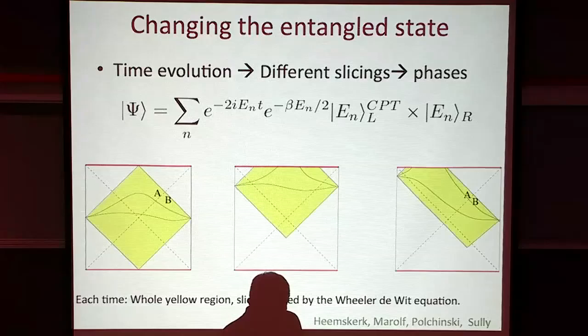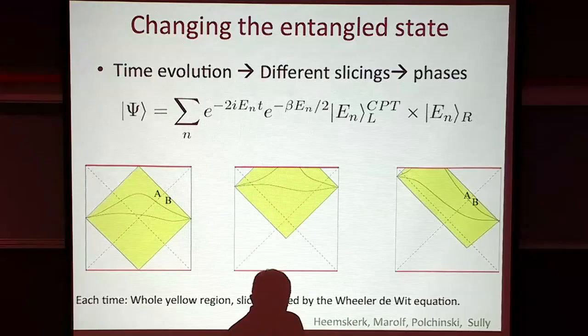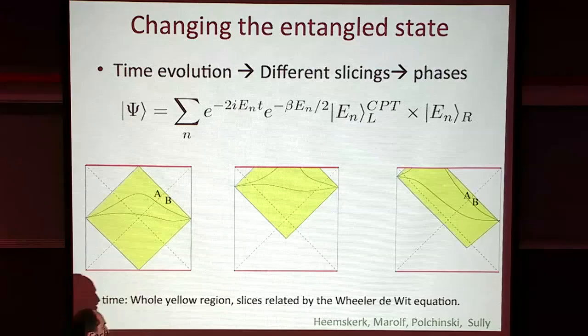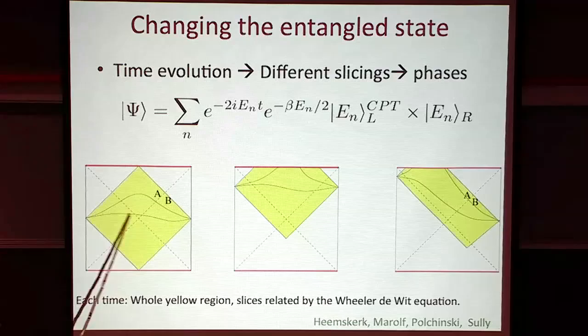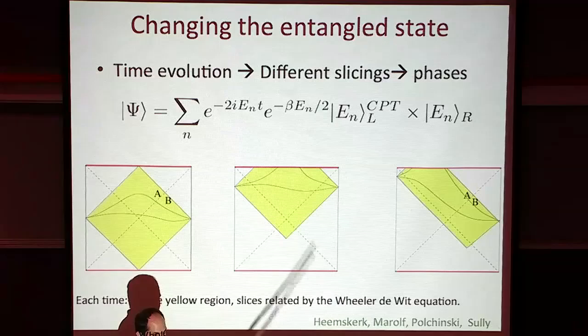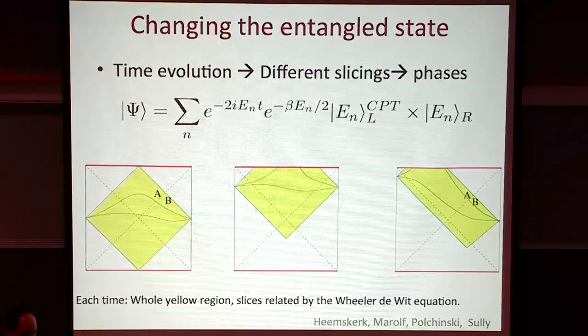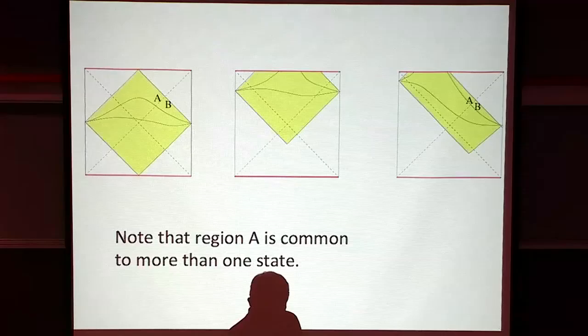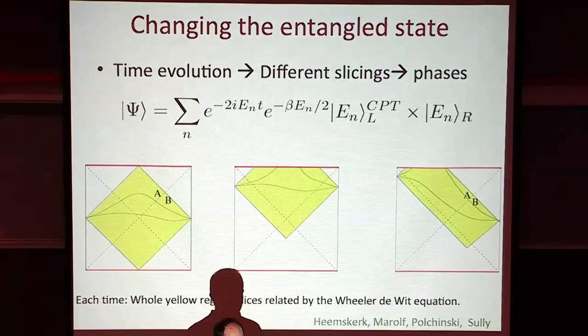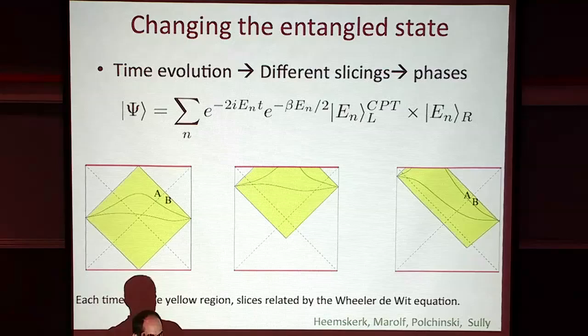Different entangled states give you different spacetimes in the interior - different combinations of tensors in the tensor network. At t=0 we have this region connecting the two; at bigger times we have another region. Even though spacetimes are different, in some cases these regions might be common to various spacetimes - the same story with tensor networks, where you might generate complicated entanglement by changing something deep inside, but tensors in some region could be the same.